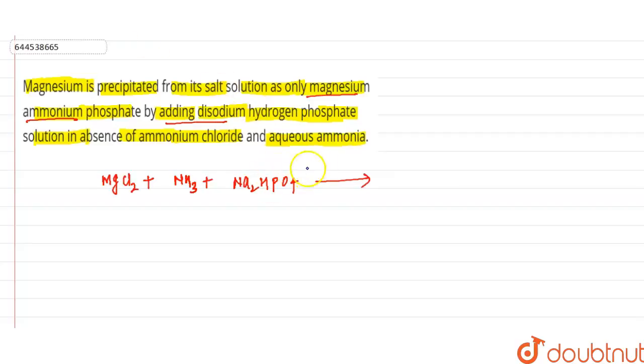Mg(NH4)PO4 - magnesium ammonium phosphate. This is a white precipitate. And why we are taking aqueous ammonia in absence of aqueous ammonia and ammonium chloride?